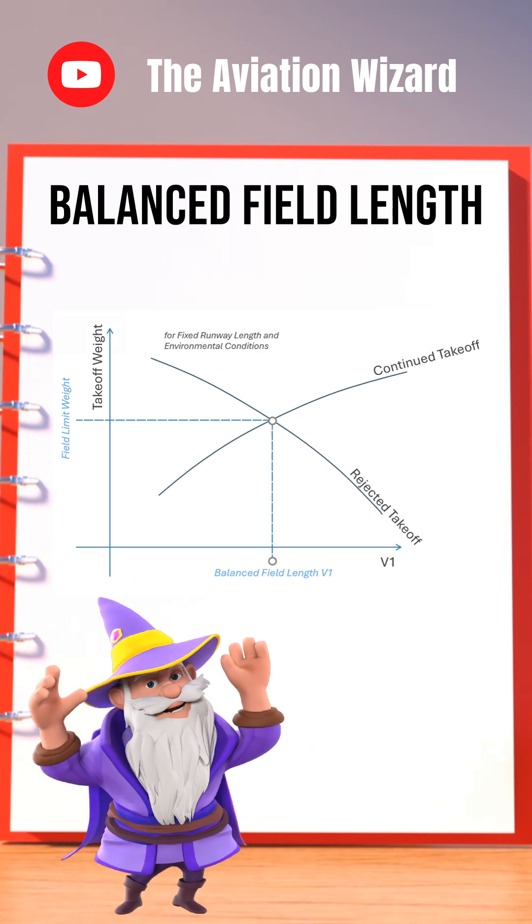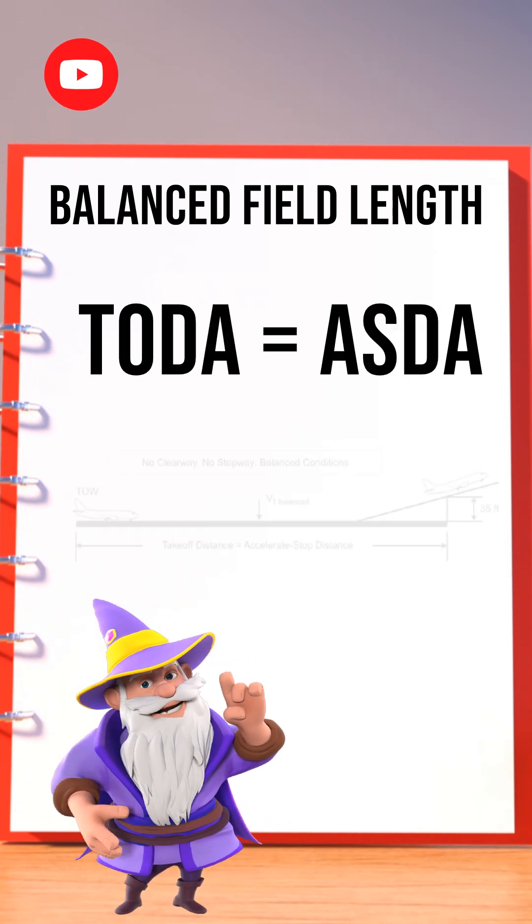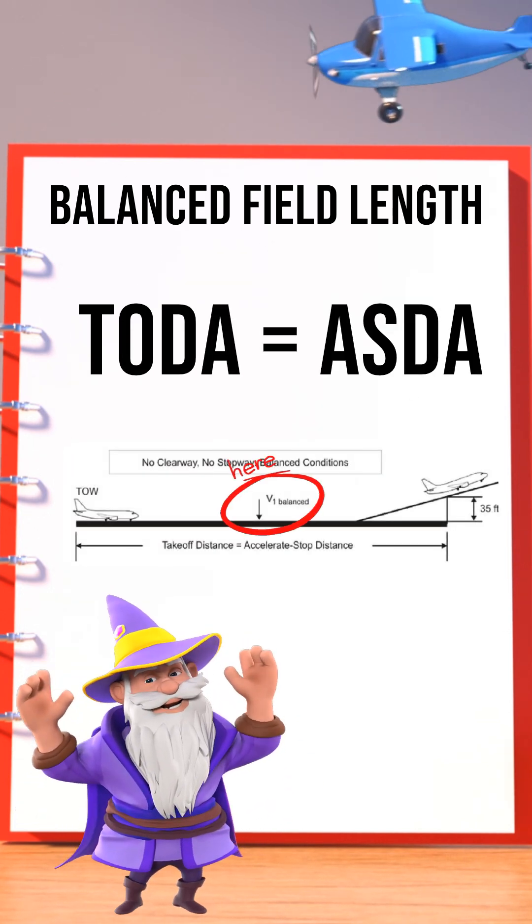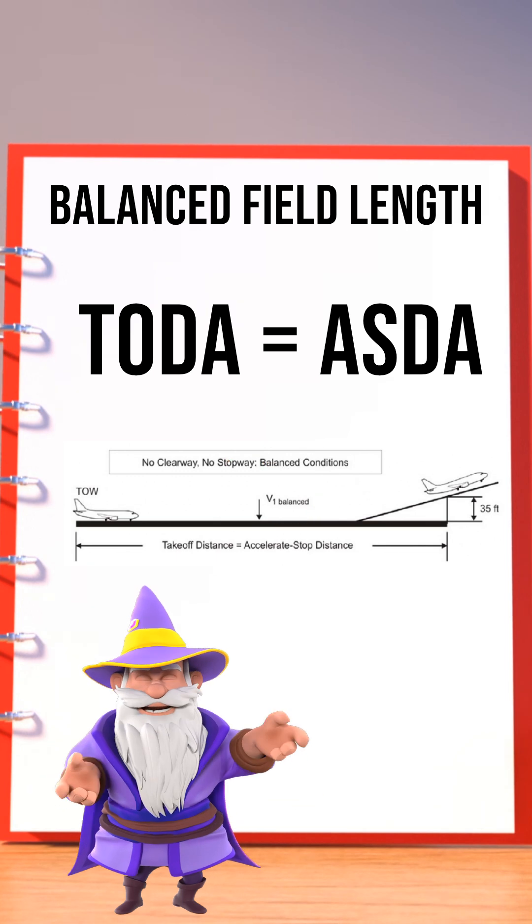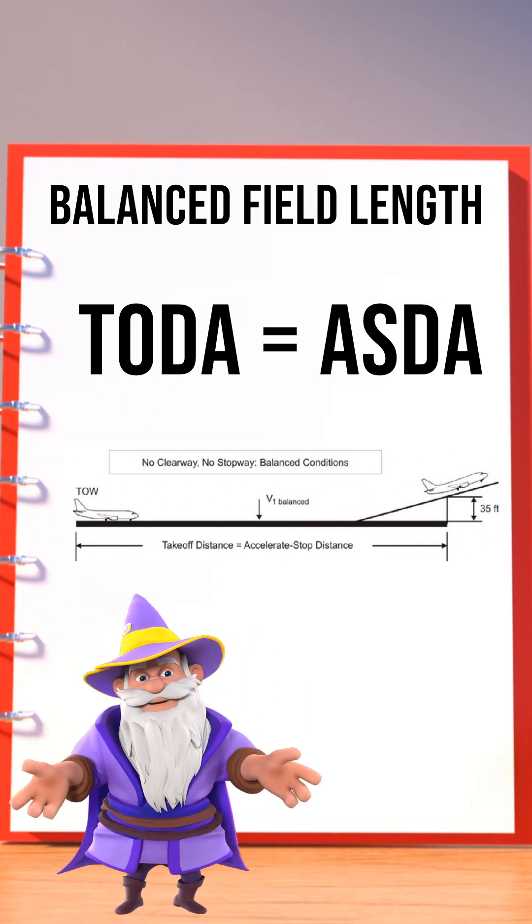In other words, in a balanced field, the TOTA equals the ASDA. So once you reach V1, there is the same remaining runway to either fully complete the takeoff or fully reject the takeoff.